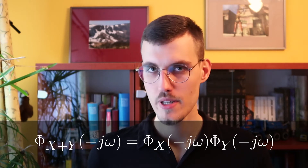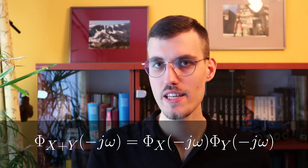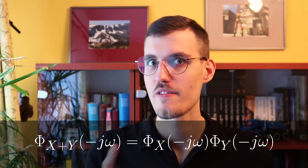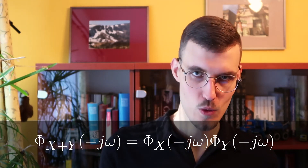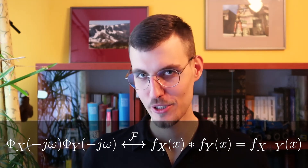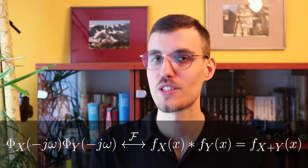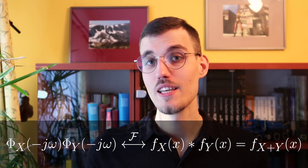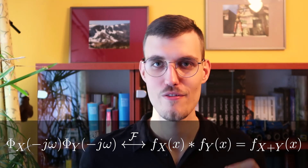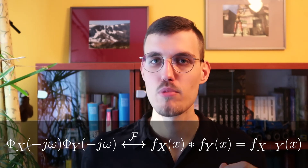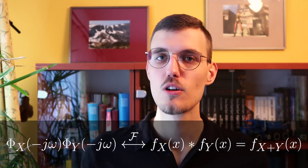Keeping in mind that X plus Y is still a one-dimensional variable, and that the characteristic function of X plus Y with a negated argument corresponds to the PDF of X plus Y in the random variable domain — combined with the fact that phi_{X+Y} equals phi_X times phi_Y — and using the convolution property of the Fourier transform, which states that multiplication in the Fourier domain is equivalent to convolution in the other domain, we conclude that the PDF of X plus Y equals the convolution of f_X and f_Y. This concludes our proof.